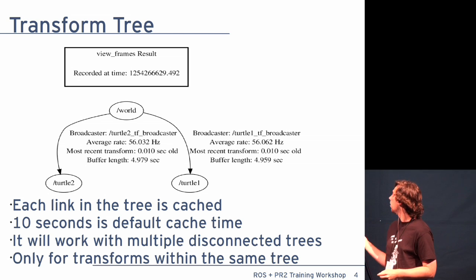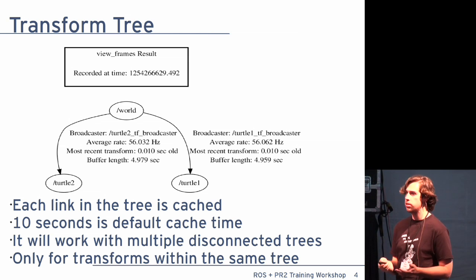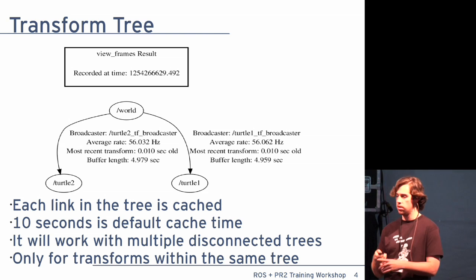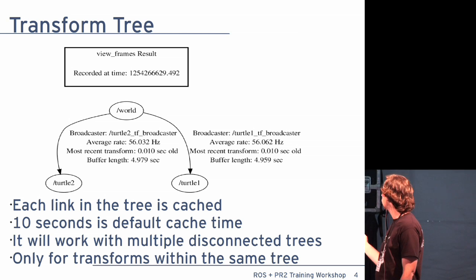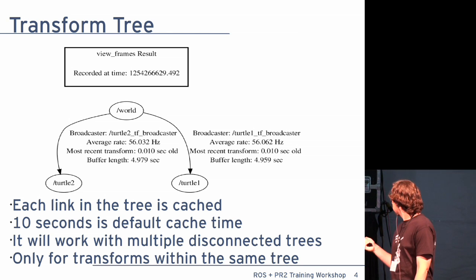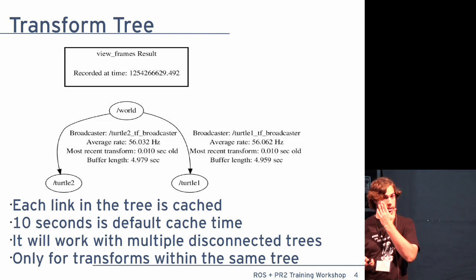But coming back to the structure, you have this tree as publishers of the transform between world and turtle two send it out. Every transform listener will build a linked list cache for, by default, ten seconds. And you can ask this listener what the transform is between the world and the turtle any time within those two seconds, and it'll return it to you. Likewise, it will give you world of turtle one, or between them. TF is built on this tree. It does not have to be a single tree. It can be multiple trees. But it will throw an exception if you try to go between disconnected trees.